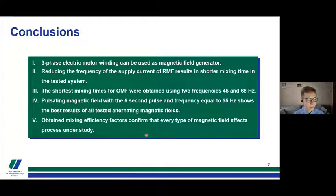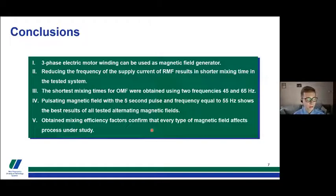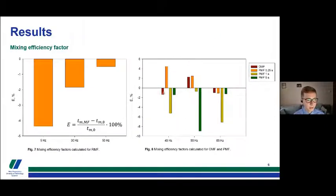A pulsating magnetic field with the five-second pulse and frequency equal to 55 Hz shows the best results of all tested alternating magnetic fields. The obtained mixing efficiency factors confirm that every type of magnetic field affects our process under study, mostly in a positive way, sometimes in a negative way.